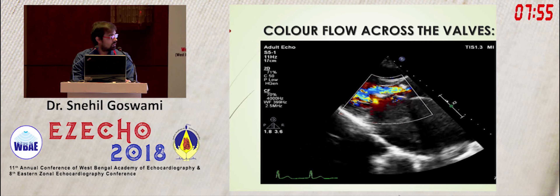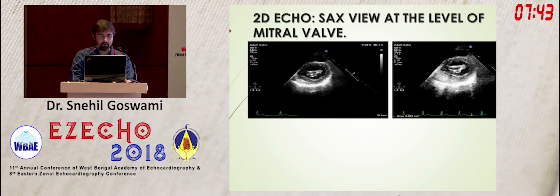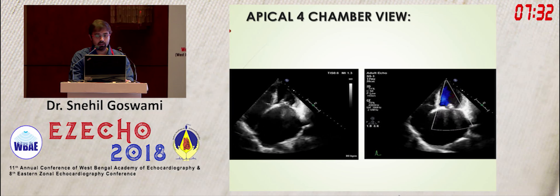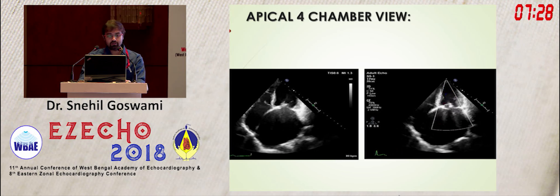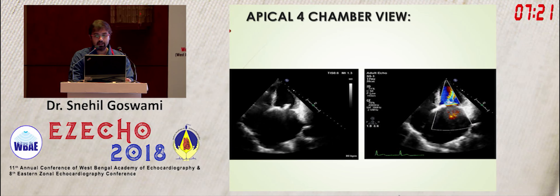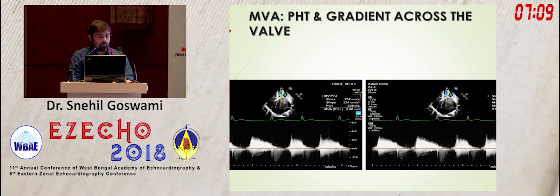In the short axis view at the level of the mitral valve, the commissures appeared free from calcium and LV function appeared normal. Mitral valve area by planimetry was 0.623 cm². In the apical four-chamber view, restricted mobility and restricted opening of the mitral valve were appreciated, with a candle flame-shaped appearance on color flow. Mitral valve area by pressure half-time was 0.96 cm², and the mean gradient of 13 mmHg was suggestive of severe mitral stenosis.